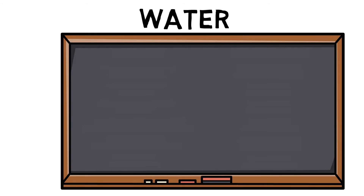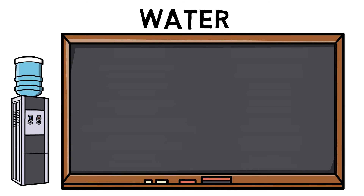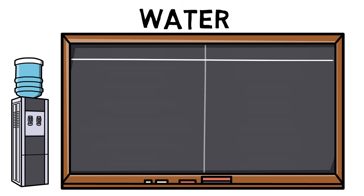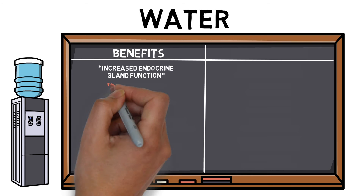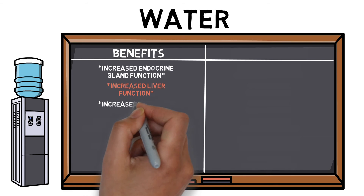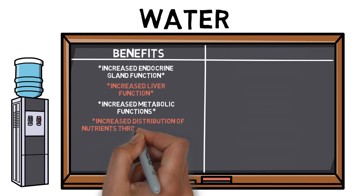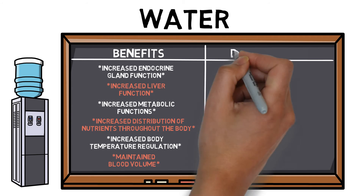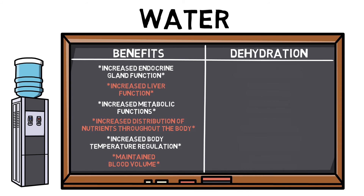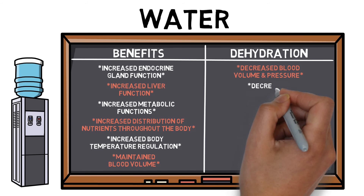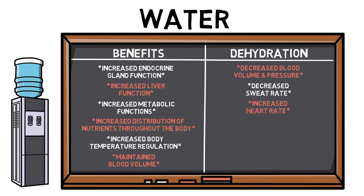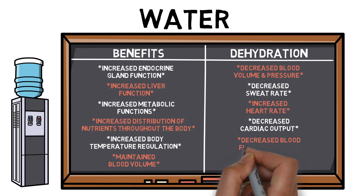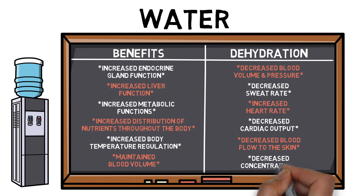Water is vital to any life form and makes up approximately 60% of an adult's body weight. Correct hydration can also have a huge effect on both physical and psychological performance factors. Benefits include increased endocrine gland function, increased liver function, increased metabolic functions, increased distribution of nutrients throughout the body, increased body temperature regulation, and maintained blood volume. Whereas the effects of dehydration include decreased blood volume and pressure, decreased sweat rate, increased heart rate, decreased cardiac output, decreased blood flow to the skin, and decreased concentration.